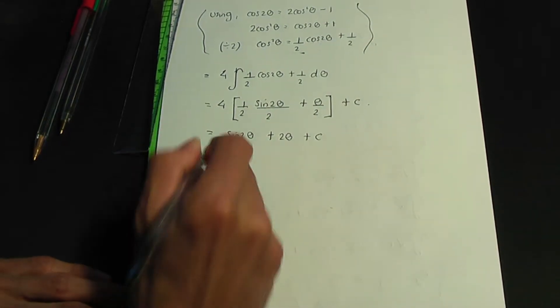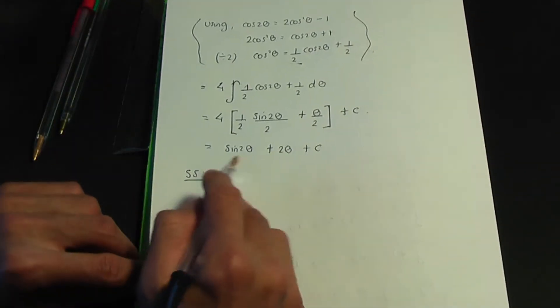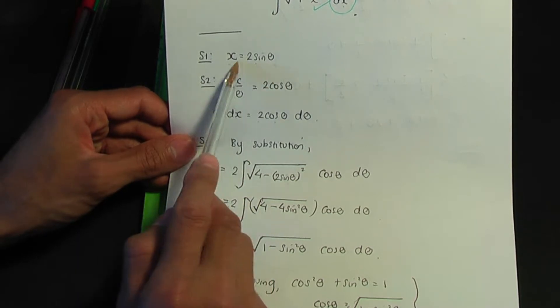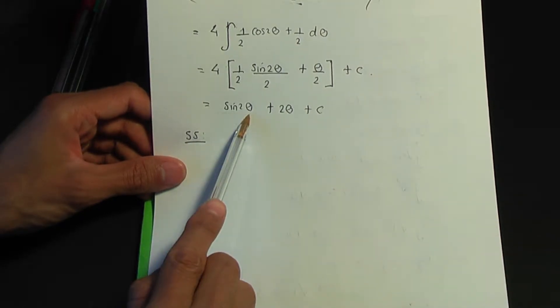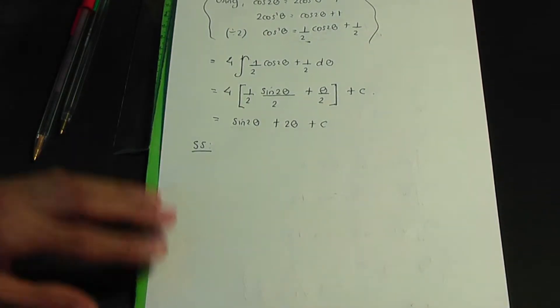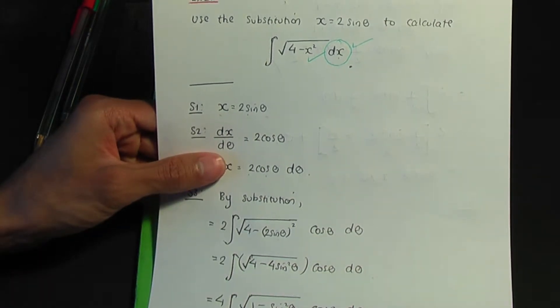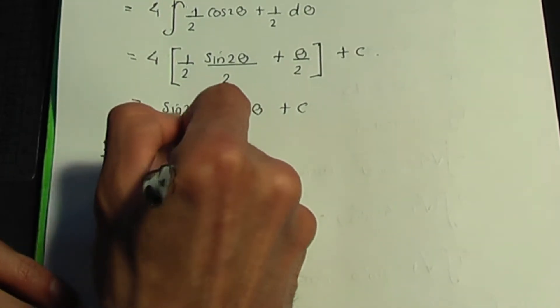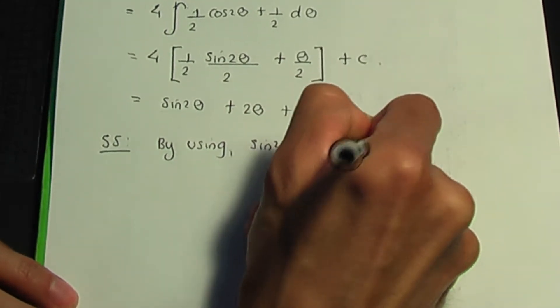Step number five: we need to write our answer back in terms of x using our substitution x equals 2 sin theta. However, our answer contains sine 2 theta, so we need to write sine 2 theta in terms of sin theta in order to get everything back in terms of x. Let's look at the sine 2 theta term.